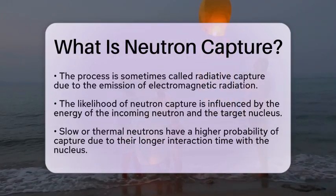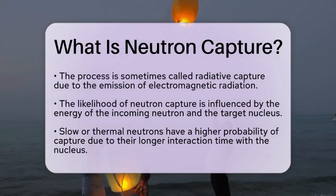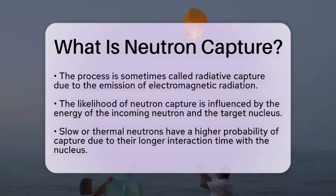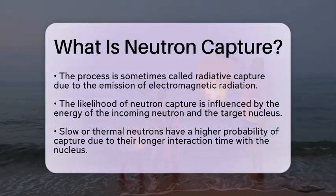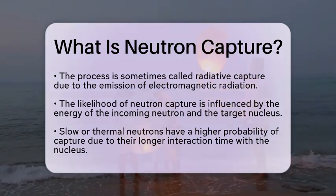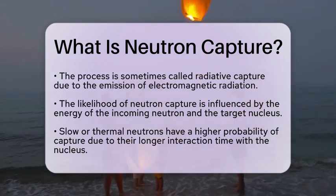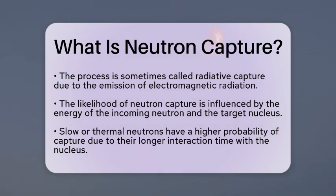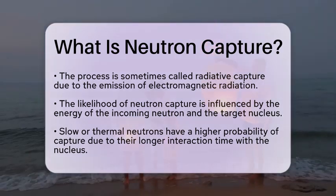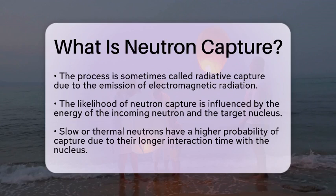The likelihood of neutron capture depends strongly on the energy of the incoming neutron and the target nucleus. Neutron capture is more likely to occur with slow, or thermal, neutrons. Their lower velocity allows for a longer interaction time with the nucleus. This relationship is described by the one-over-velocity law, which states that the capture cross-section increases as neutron velocity decreases.